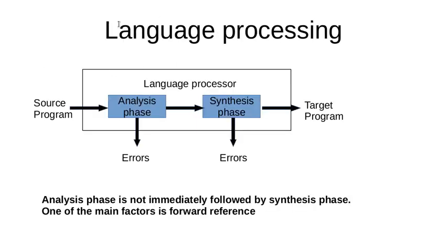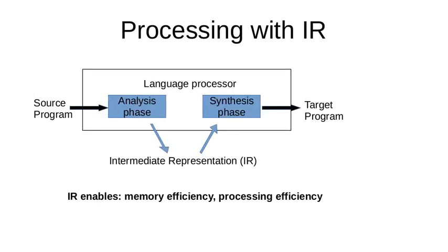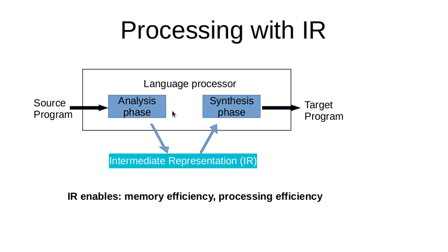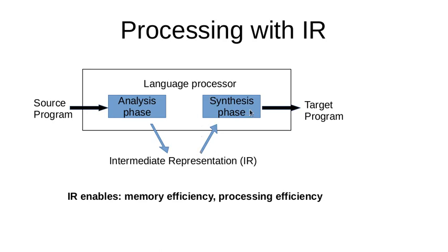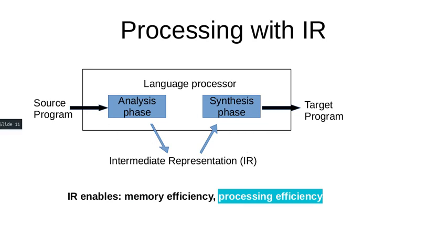The output of pass 1 is known as the intermediate representation, also referred to as IR. This IR is generated by pass 1 and used as input to pass 2 for synthesis. The block diagram for language processing can be modified to show processing with intermediate representation: the source program is fed to the analysis phase, which generates an IR when there are no errors, and that IR is fed to the synthesis phase to produce the target program. This step enables both memory efficiency and processing efficiency, and also solves the problem of forward reference.